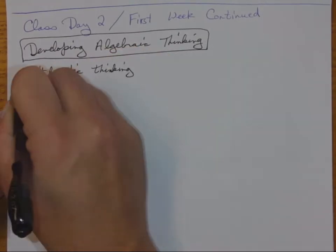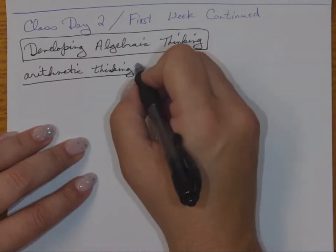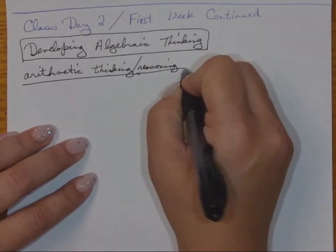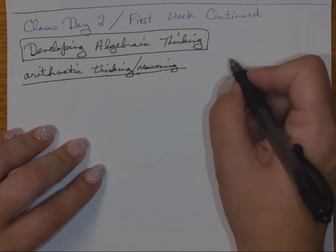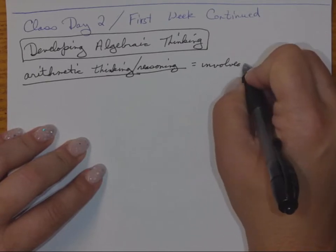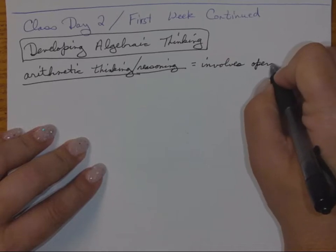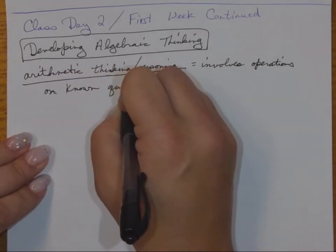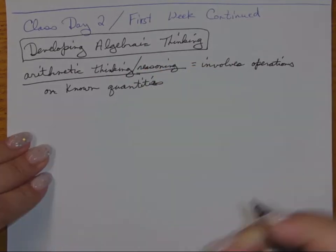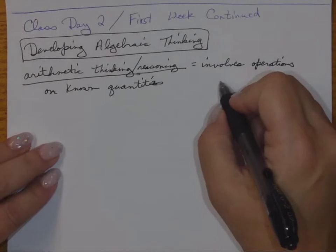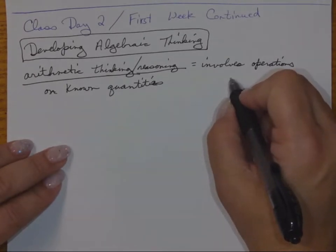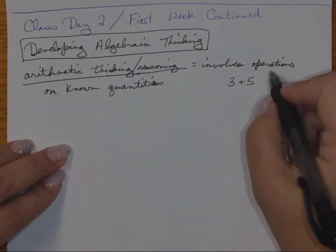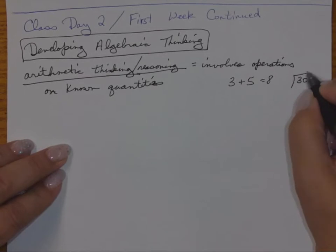If you've read through your book, thinking and reasoning are considered similar. Arithmetic thinking involves operations on known quantities. Think about that — if students have been doing work in kindergarten through fourth grade, they might have been doing things like three plus five, which equals eight, or thirty divided by six, which equals five. Those are known quantities.